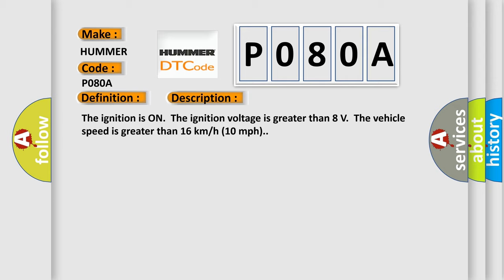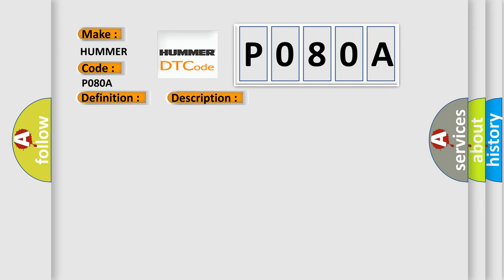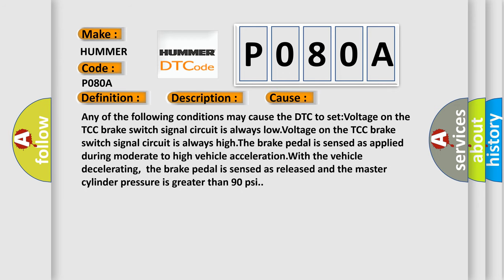This diagnostic error occurs most often in these cases. Any of the following conditions may cause the DTC to set: voltage on the TCC brake switch signal circuit is always low, voltage on the TCC brake switch signal circuit is always high, the brake pedal is sensed as applied during moderate to high vehicle acceleration. With the vehicle decelerating, the brake pedal is sensed as released and the master cylinder pressure is greater than 90 psi.